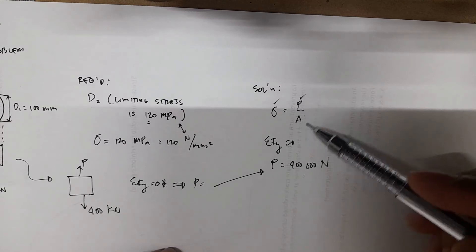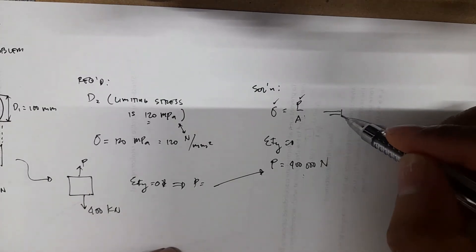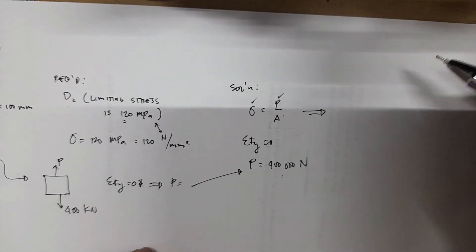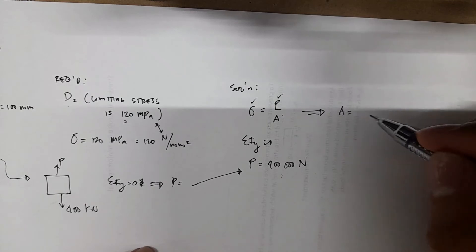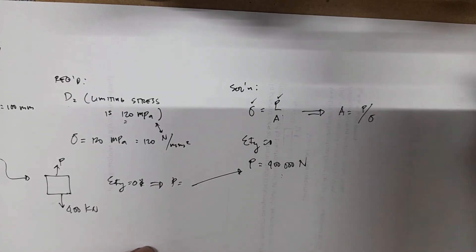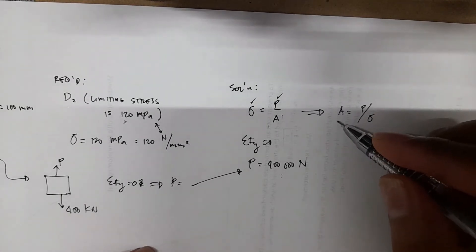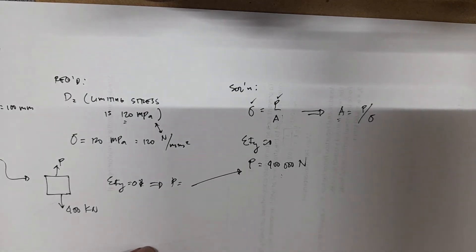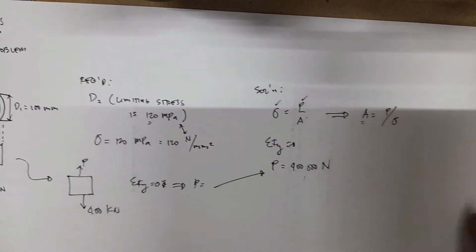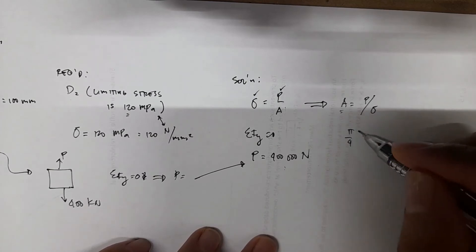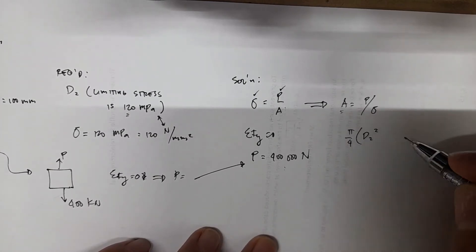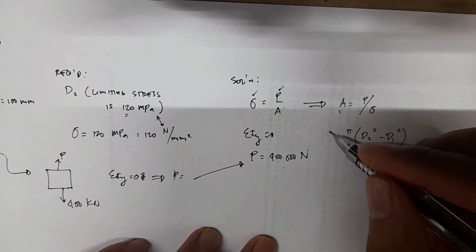Now to solve for area, this equation will become area equals P over sigma. And area for a hollow tube, you can compute the area as pi over 4, D2 squared minus D1 squared. That's the area.